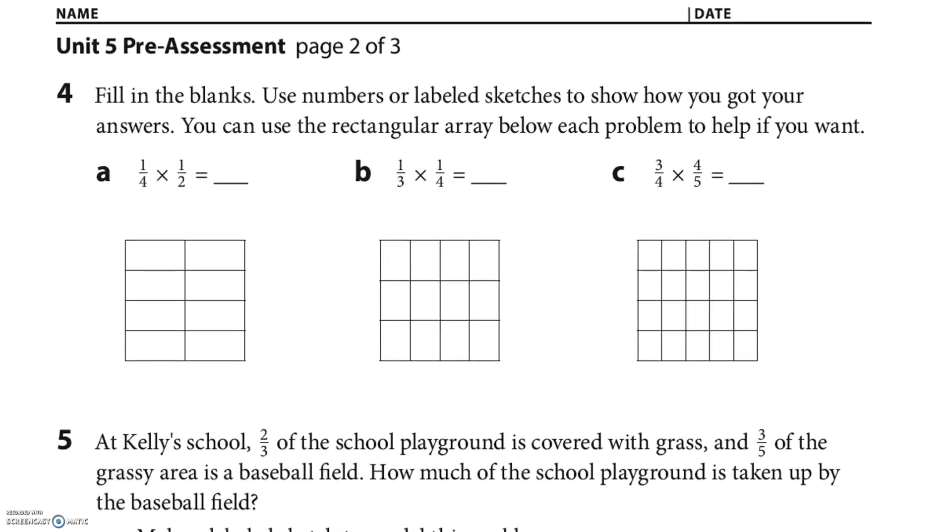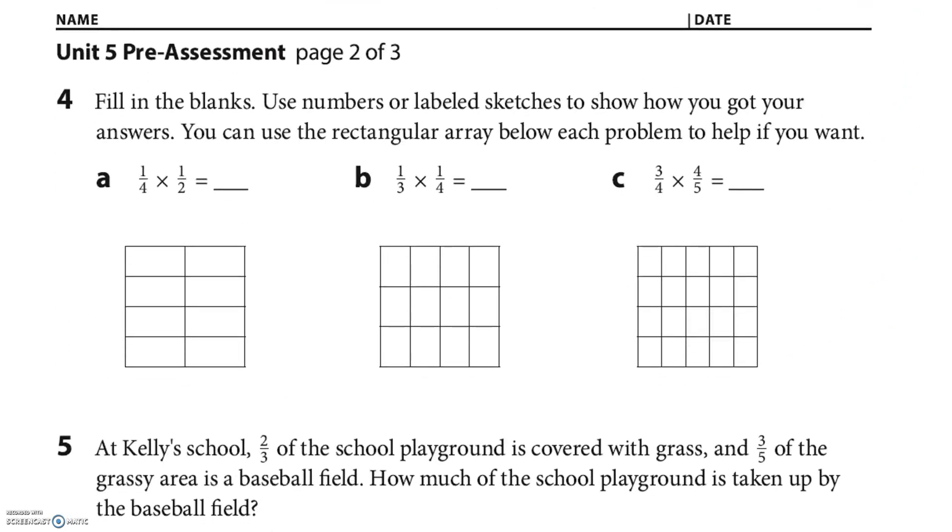All right, fill in the blanks, use the numbers or label sketches to show how you got your answers. You can use the rectangular array. Okay, I'm gonna use it. So the left side, there's four, I'm gonna go by one of them, and the right side is a half, or is two. So I'm gonna do this, I only colored in one of the eight total that were there. Okay, let's do the next one. Here's my 1/3, here's my 1/4, I colored in one of, it looks like 1, 2, 3, 4, 4 times 3, 12, 1/12.